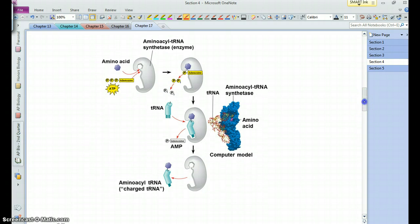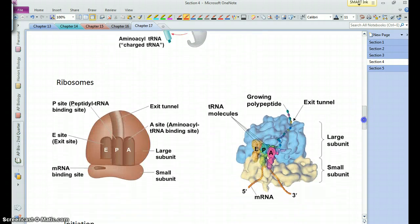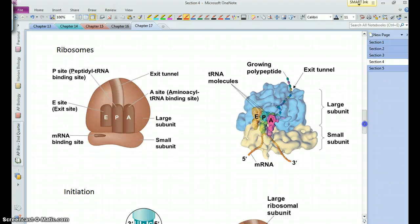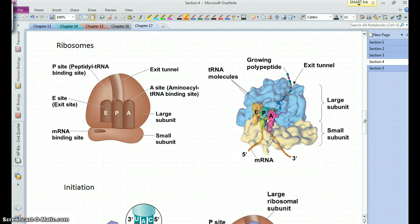So then those tRNAs have their attached amino acid, they can travel over to the ribosome. The ribosome consists of a large and small subunit, and there's three different spots on the ribosome, the A, the P, and the E.